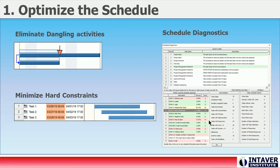Hard constraints — these types of constraints, such as must start on or must finish by, block updates to the schedule. All hard constraints should be replaced by soft constraints, such as start as soon as possible.